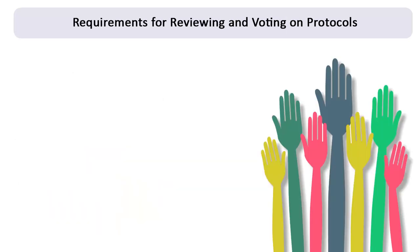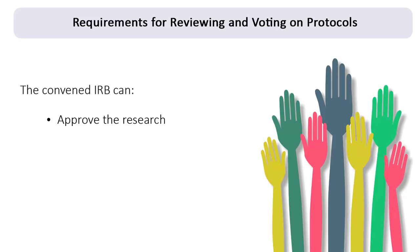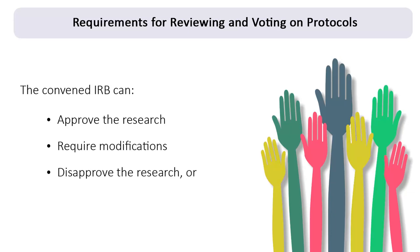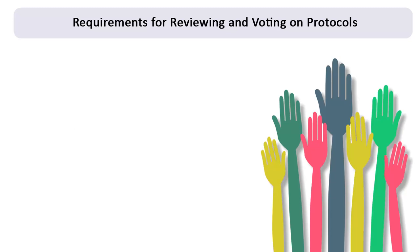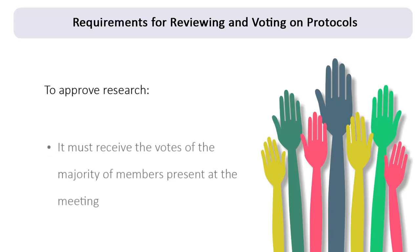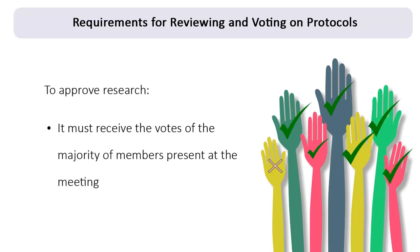The regulations also set out requirements for reviewing and voting on research protocols. After reviewing each protocol, the convened IRB can vote to approve the research, require modifications to secure approval, disapprove the research, or table the research for action at another time. According to the regulations, in order for the research to be approved, it must receive the votes of the majority of members present at the meeting.